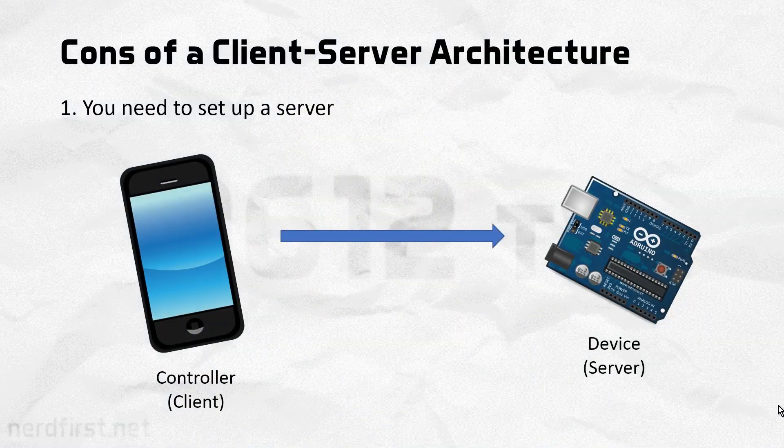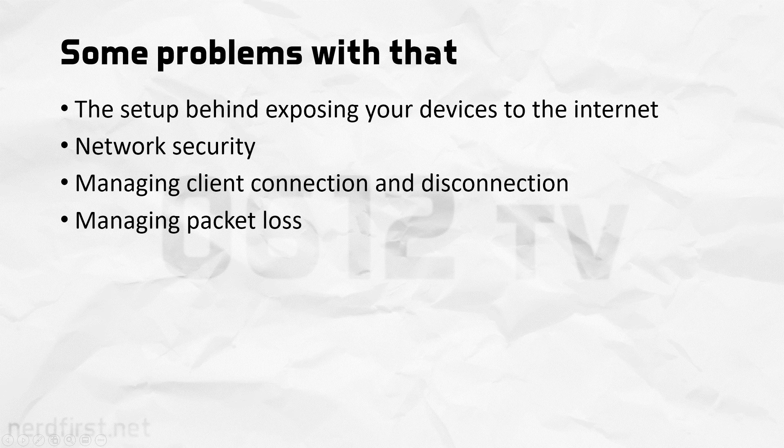Firstly, a client-server protocol implies the existence of a server. If you're going to be interconnecting multiple devices, then one of them needs to act as a server, and basically your devices will have to have a direct connection. This can be problematic for a bunch of reasons. First and foremost, because you're essentially setting up your own server, you need to make your server discoverable on the network. There are some challenges to doing this, including things like security.